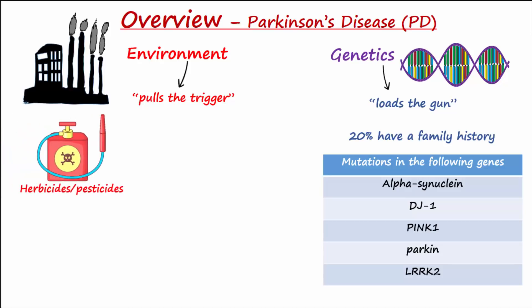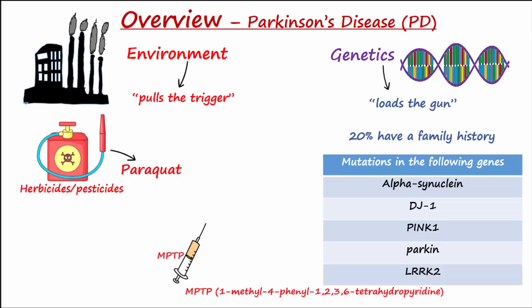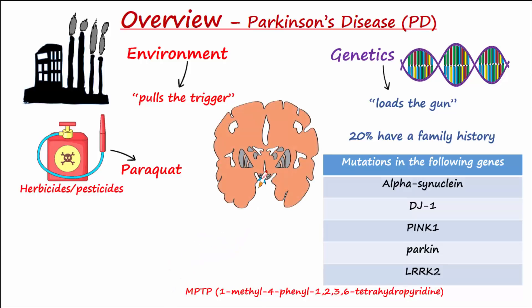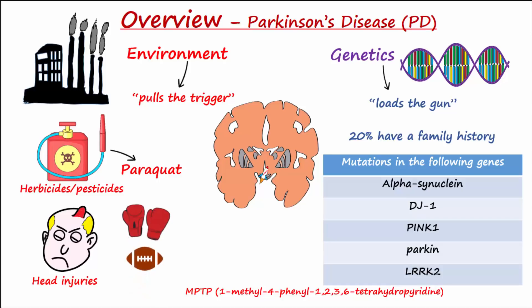Environmental factors such as exposure to certain herbicides and pesticides increase the risk for PD. A meta-analysis published in the Journal of Neurology found that exposure to the herbicide paraquat was associated with a two-fold increase in the risk for Parkinson's disease. The toxin MPTP from contaminated meperidine or heroin is known to cause PD — MPTP stands for methylphenyl tetrahydropyridine — and acts to selectively destroy dopaminergic neurons in the substantia nigra. A history of head injuries also increases the risk for PD, so boxers and football players may have an increased risk.